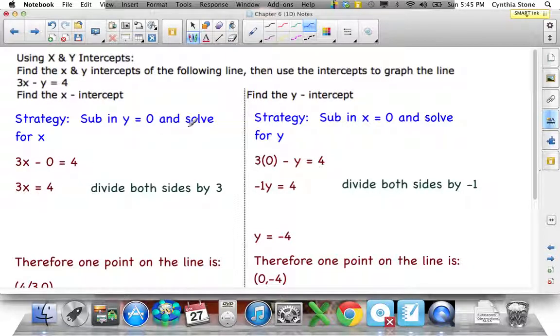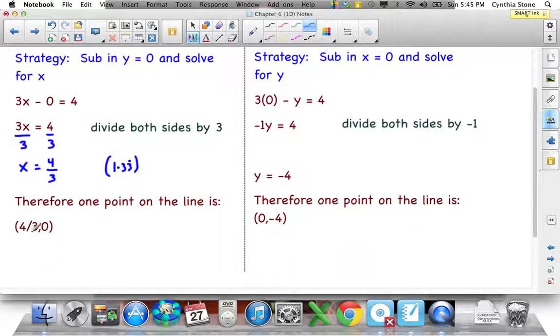I'm subbing in y equals 0, so instead of writing y, I write 0. Then that means 3x equals 4. Then to find, better write this out, we need to divide both sides by 3. And that leaves us with x equals 4 over 3. We'll leave that as a fraction. But if you were to put that in your calculator, you'd get 1.3333 repeated. That tells us one point in the line. It's 4 over 3 and 0, the x-intercept in 0.